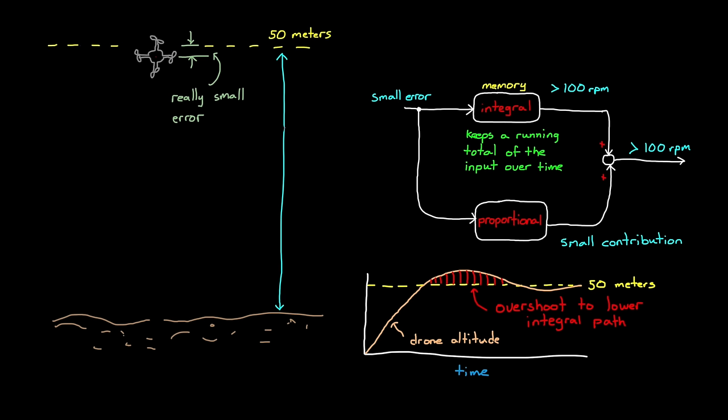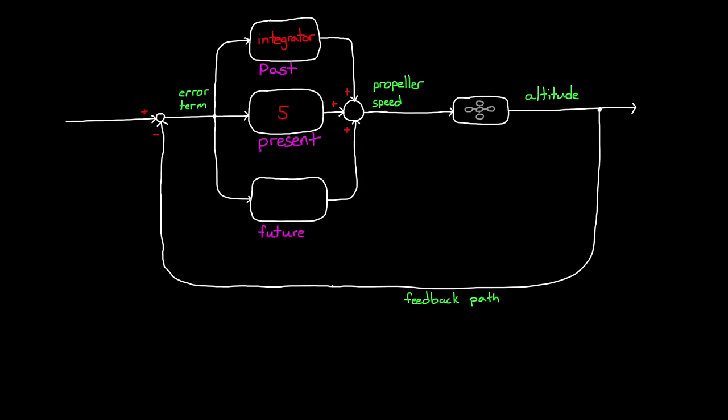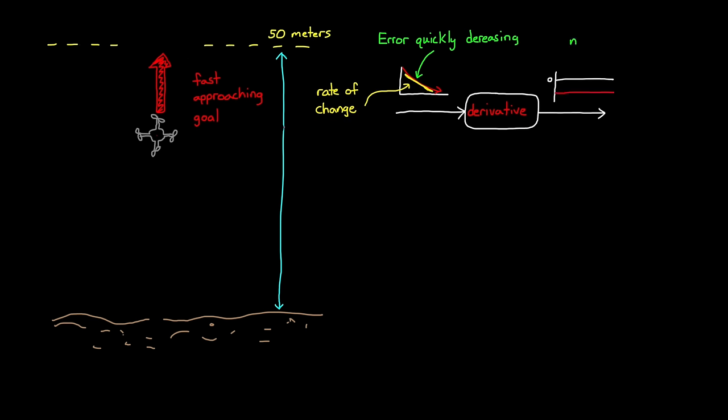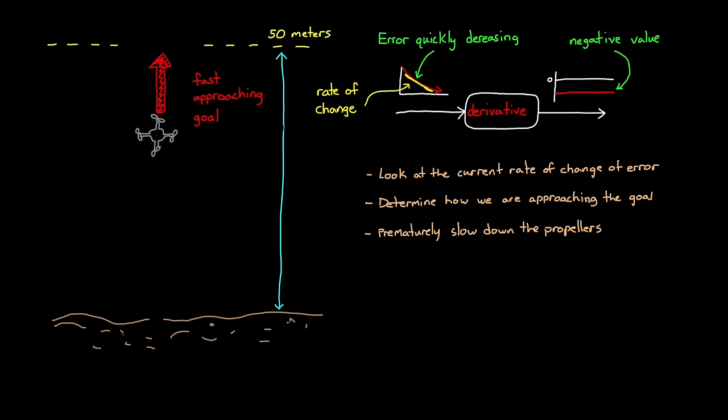Luckily, there is a simple way around this problem. And that is by adding a path to our controller that can predict the future and respond to how fast we're closing in on our goal. And we do that with a derivative. A derivative produces a measure of the rate of change of the error. That is, how fast the error is growing or shrinking. For example, if our drone is rising quickly and fast approaching our goal, this means that the error is quickly decreasing. That decreasing error has a negative rate of change, which will produce a negative value through our derivative path. That negative value will be added to our controller's output, therefore lowering the propeller speed. Basically, our controller is using changing error to determine that we are closing in on our goal way too fast, and then prematurely slowing down the propeller speed, preventing the drone from overshooting.